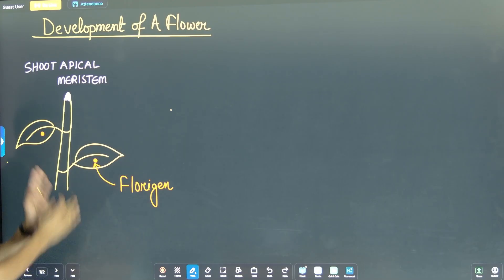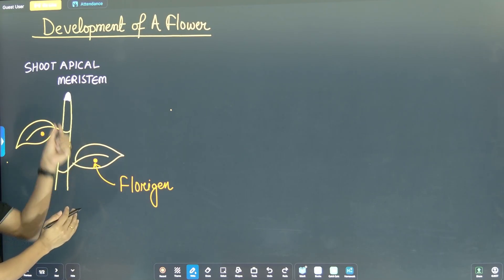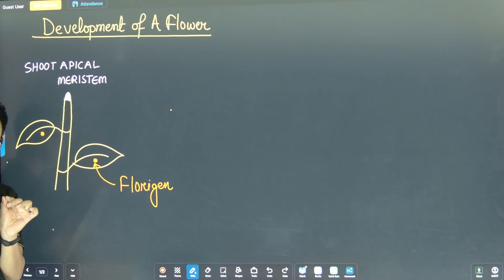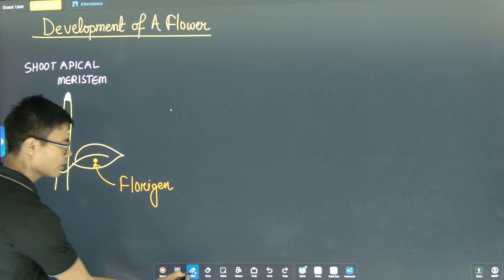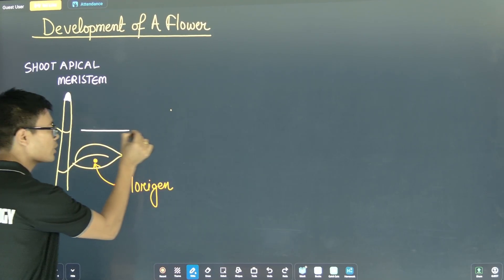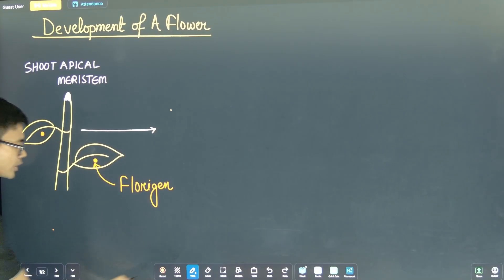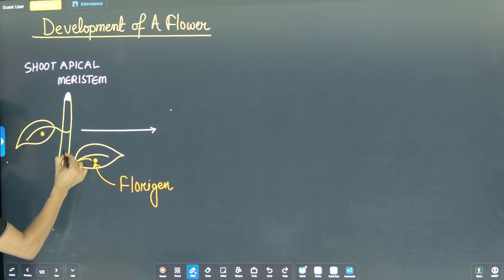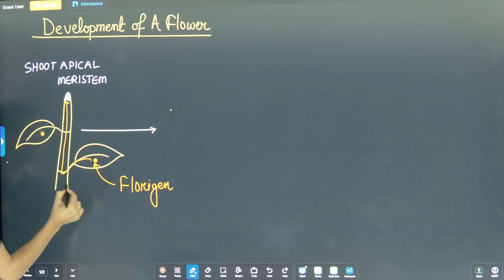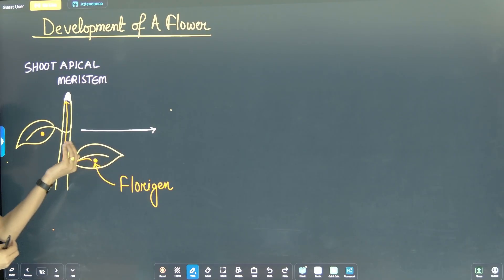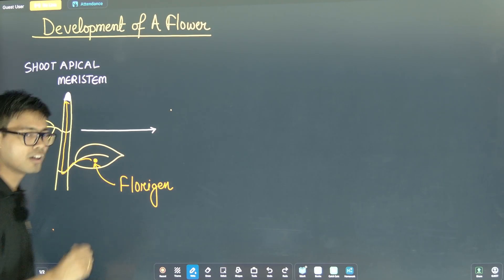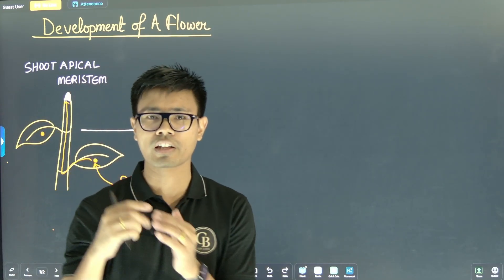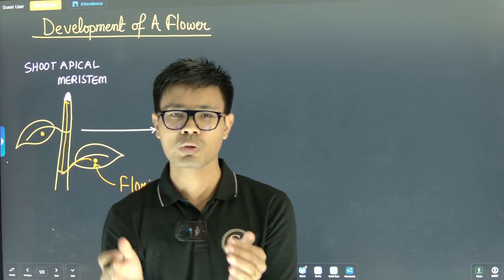So, once again, I am repeating. I am drawing a plant with the stem, leaves, and the shoot apical meristem. I am also showing a hormone present in the leaves — florezine. During the development of the plant, florezine starts moving towards the stem and towards the tip, towards the shoot apical meristem.